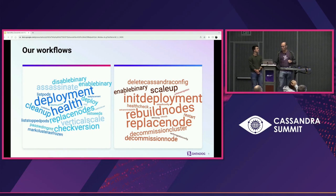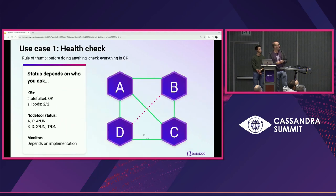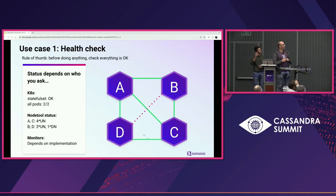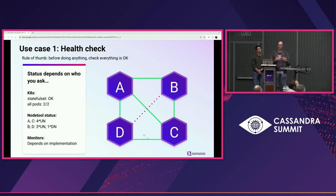Here are a few names of our workflows — they're self-explanatory: deployment, health cleanup, list start pods, replace nodes, rebuild nodes. We do pretty much everything with them. The health check has been a really important building block for us. It's just about answering this simple question: is my cluster okay? And if you've worked with Cassandra, you know that's not simply either totally okay or totally broken.